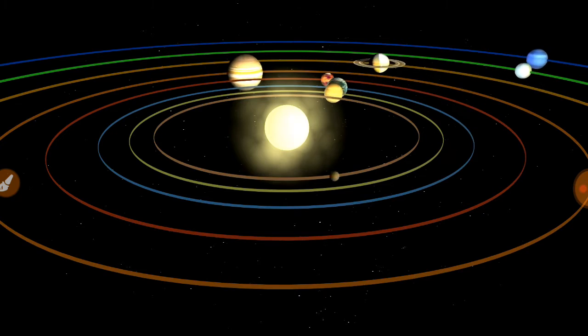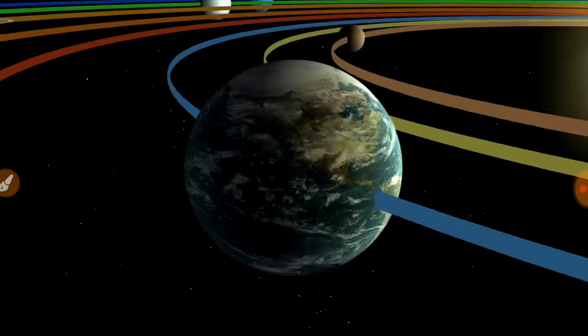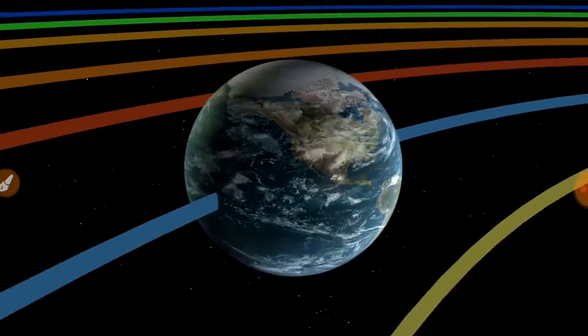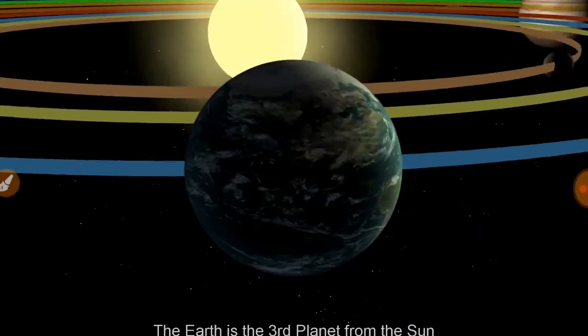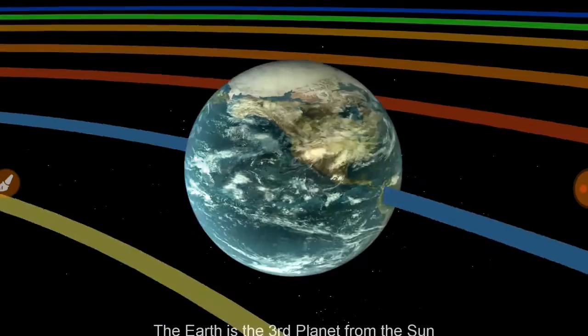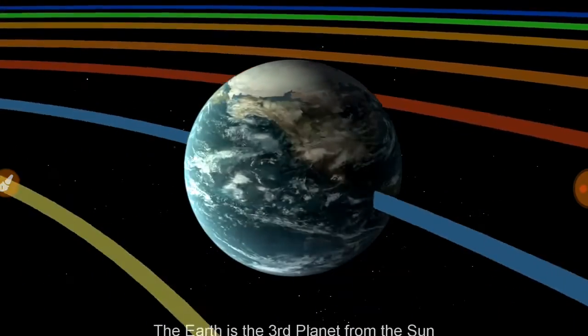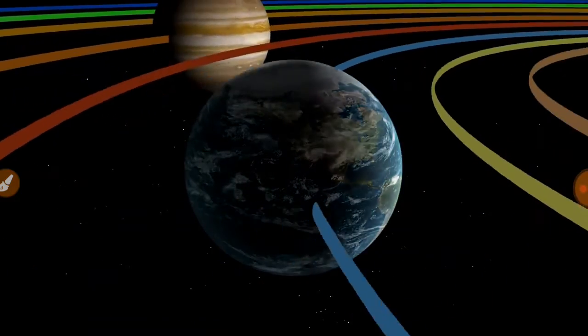And if we talk about the Earth, the Earth is the fifth largest planet in size, while the third nearest planet to the sun. The shape of the Earth is called geoid because of its slightly flattened shape at the poles.